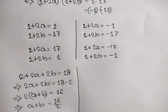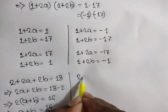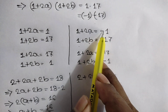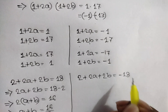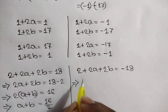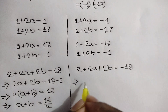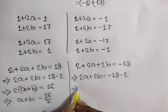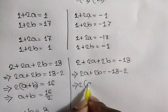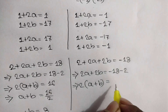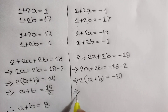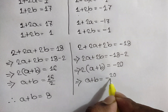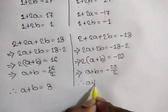Adding the two equations for the second case, we get 2 plus 2a plus 2b equals negative 17 plus negative 1. So 2a plus 2b equals negative 18 minus 2, which equals negative 20. Taking common 2, we write 2(a plus b) equals negative 20. Dividing by 2 on both sides, a plus b equals negative 10.